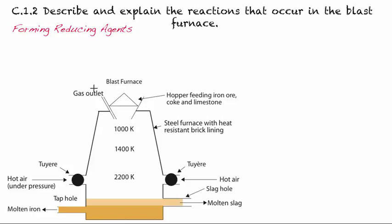We have a gas outlet where gas can escape. Here we have a hopper, a way to feed in iron ore. Iron ore is usually iron that's with oxygen, so an iron oxide, and it will also have some impurities in it — some silicon and potentially some carbon. Over here we have the air that's going to be blown in under high pressure.